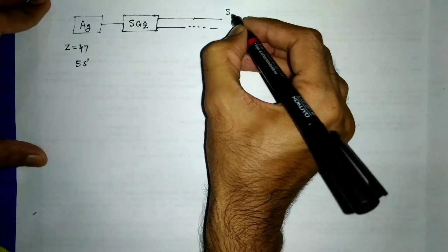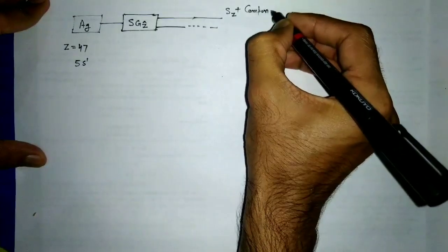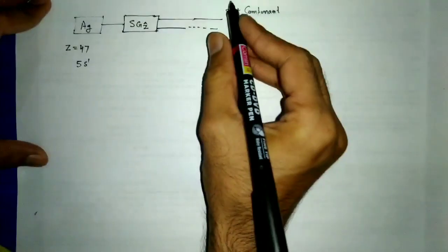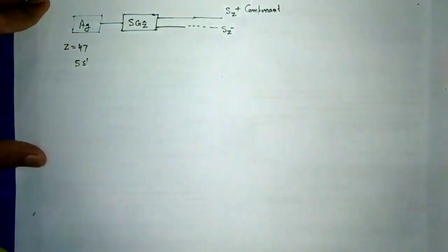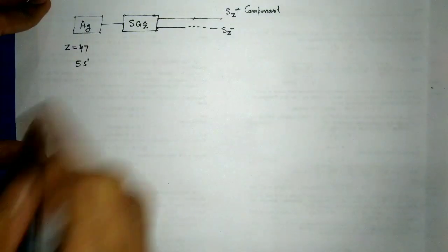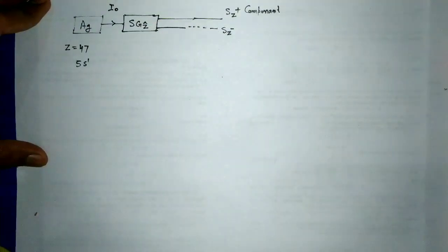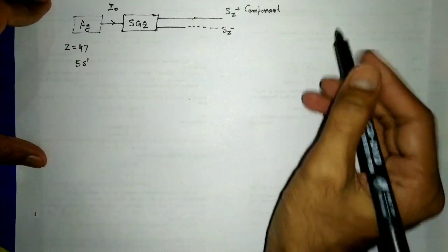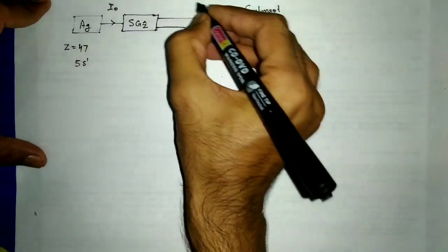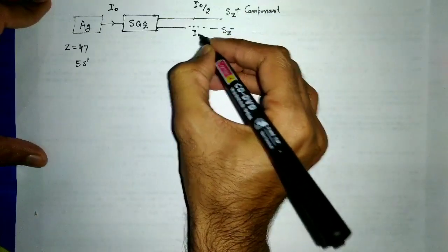The two components are the Sz+ component and the Sz− component. If the intensity of the incident beam is I₀, then the intensity of each component — Sz+ and Sz− — is I₀/2.